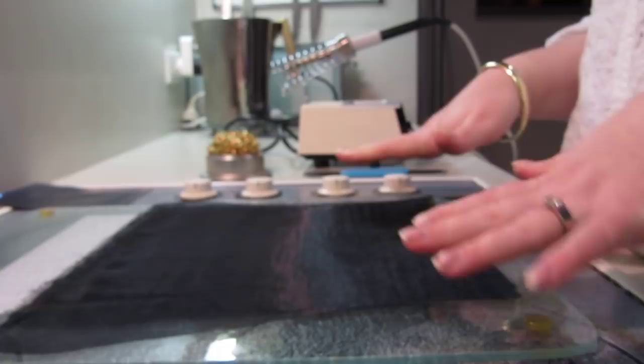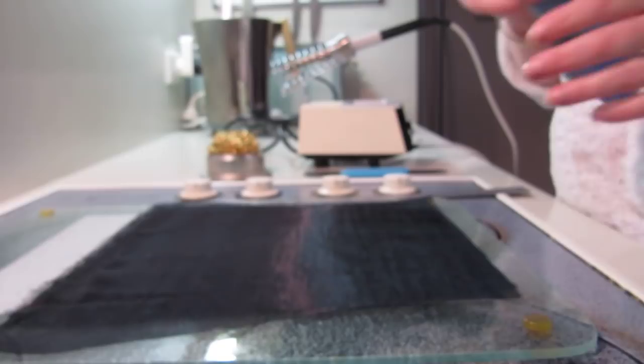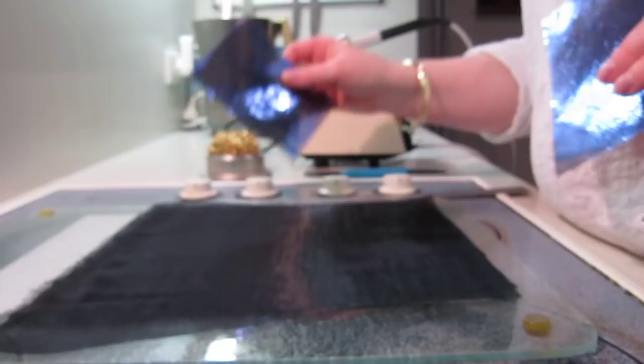Now we are going to cut out the black organza with the soldering iron, which will seal the edges as well as holding all three of those pieces quite firmly together.